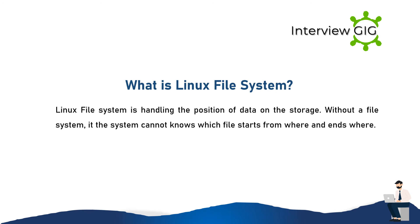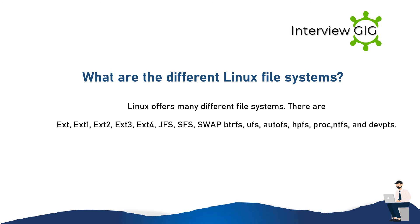What is the Linux file system? The Linux file system handles the position of data on storage. Without the file system, the system cannot know which file starts where and ends where. What are the different Linux file systems? Linux offers many different file systems: ext, ext1, ext2, ext3, ext4, JFS, SFS, swap, BTRFS, UFS, AUTOFS, HPFS, ReiserFS, NTFS.